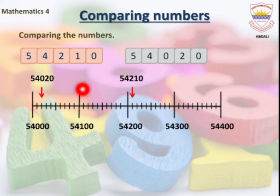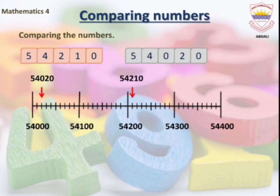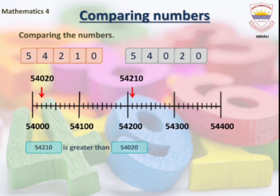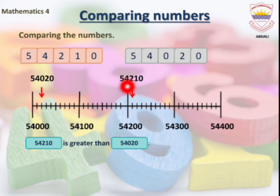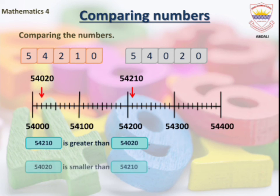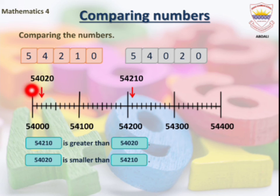On the number line we move from smaller to greater, so 54,020 is smaller and 54,210 is greater. We write: 54,210 is greater than 54,020, and 54,020 is smaller than 54,210.